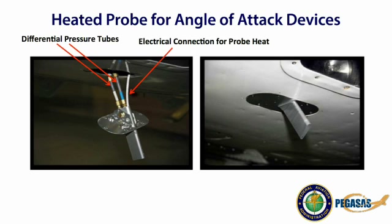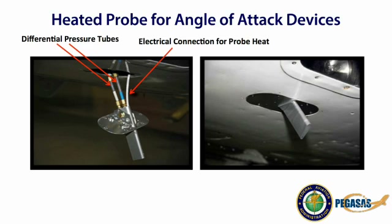Installation of the optional probe heat function requires some planning. The probe heat will require a separate switch and fuse or breaker along with the appropriate wiring per Advisory Circular AC 43.13-1B, Chapter 11, Section 5. The probe heat requires over 7 amps of electrical power. Use shielded wire to minimize interference with other instrumentation, and route wiring to minimize risk of mechanical damage or damage caused by fluids, vapors, or heat sources. Operation of the probe heat does not affect the angle of attack calculations or readings.